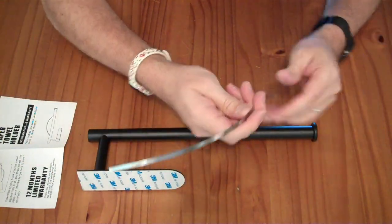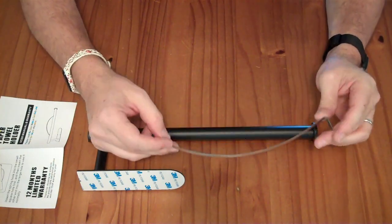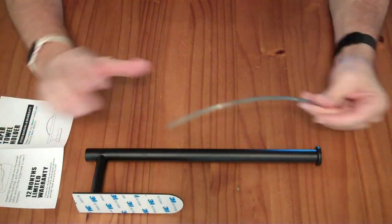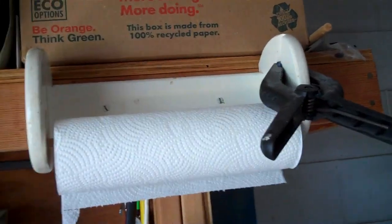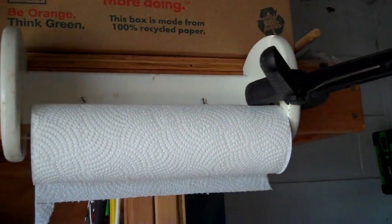I'm excited about this because it has this optional little spring clip and the spring clip will keep the paper towels from unrolling. I have one of these out in my garage, and unfortunately whenever I open my garage door, the wind blows the paper towels around.